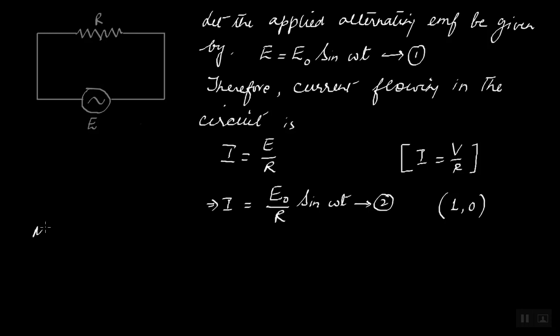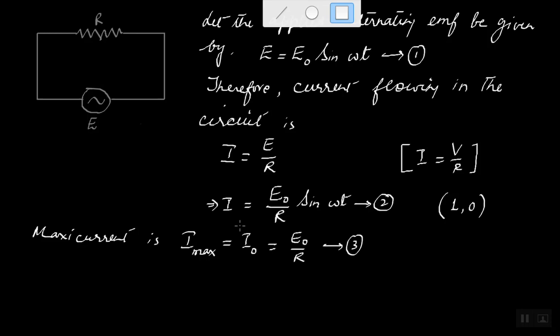So I here will be maximum if this sine omega t is maximum, that means if its value is one. So maximum current is I max, but then maximum current, what do we call it? We call it the peak value of the current, and that is denoted by I naught. So this I max is, if you replace sine omega t by one, you get E naught by R. Let's call this equation three.